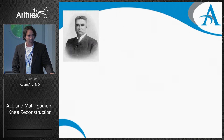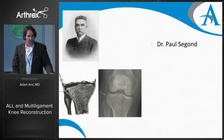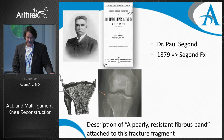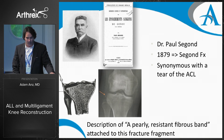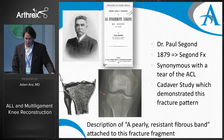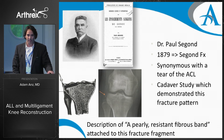The history of it all begins with Paul Segond. In 1879, he wrote his manuscript and really coined the term the Segond fracture. From there, we thought that this was synonymous with ACL injury and we started looking at and thinking about anterolateral instability as early as then.